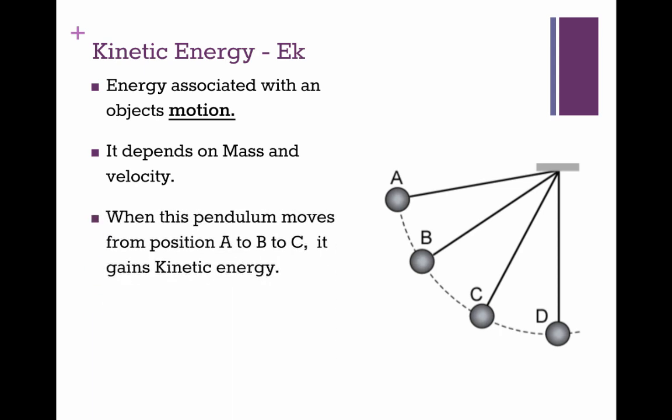When the pendulum moves from position A to B to C, it gains kinetic energy because it's gaining speed. When it reaches D, it is moving at its fastest, and it has all kinetic energy, because it is down at its lowest position.